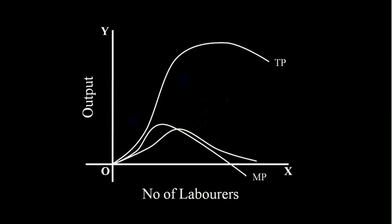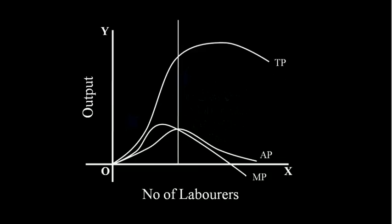Draw the Average Product Curve and name it. The marginal product curve cuts its maximum point from above. Now show the three phases of the law. To show the first phase, draw a vertical line exactly at the peak of average product. To show the second phase, draw a vertical line exactly at the point where marginal product becomes zero. That completes our graph.